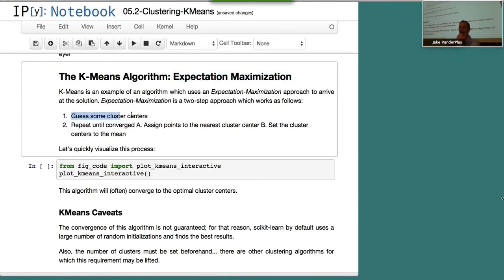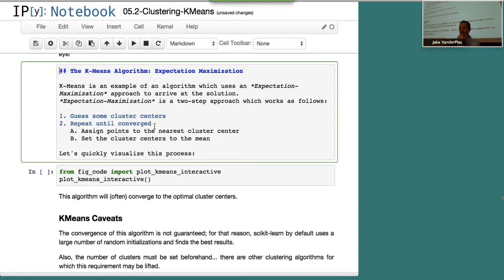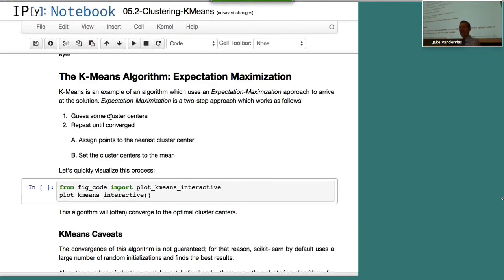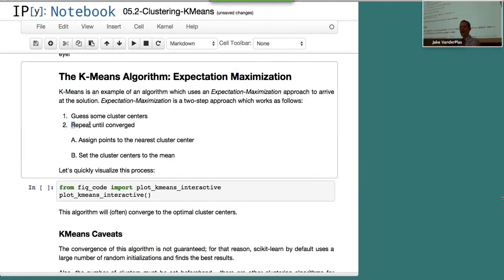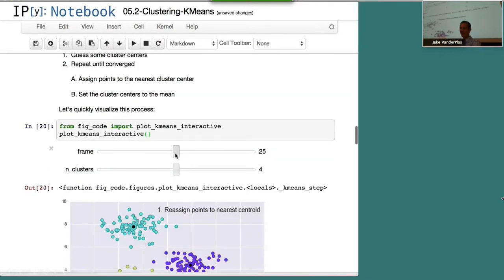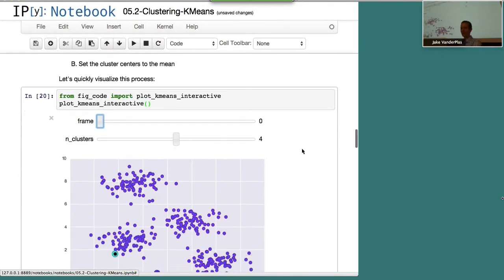You guess some cluster centers. And then you repeat this until converged. You assign the points to their nearest cluster center and then you set the cluster centers to the mean of those points. And you do that over and over again. So just to show you how this might work, I made this little animation.